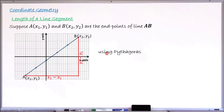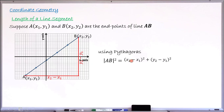According to Pythagoras' theorem, the square of the longest side equals the sum of the squares of the two other sides. In this case, my longest side is length AB. So AB² equals (x₂ − x₁)² + (y₂ − y₁)². This is exactly what Pythagoras' theorem gives us.